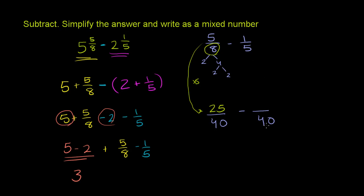Now to go from 5 to 40, we have to multiply by 8. So we also have to do that for the numerator. So 1 times 8 is 8. So now we have 25 fortieths minus 8 fortieths, which would be equal to, we're going to have 40 as the denominator. 25 minus 8 is 17.